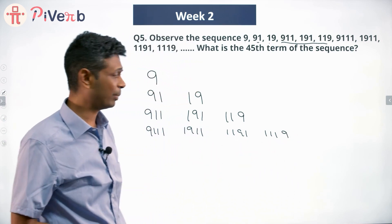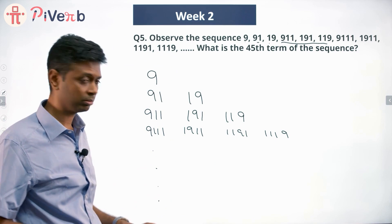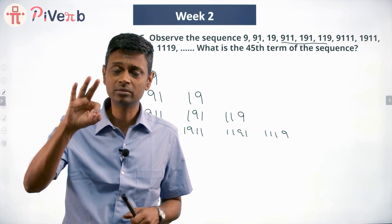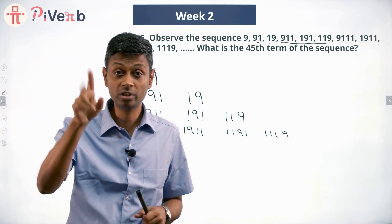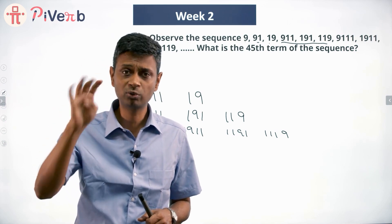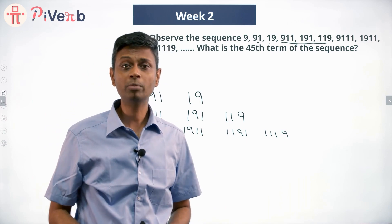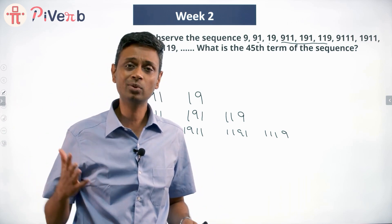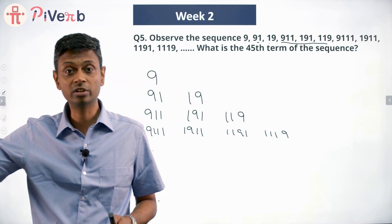Now we have got the pattern. Then we will have 5-digit, 6-digit, 7-digit, 8-digit numbers and so on. How many 3-digit numbers are there? Three — because 9 could be in the first, second, or third position. How many 4-digit numbers? Four. How many 14-digit numbers? Fourteen — 9 goes from the first digit all the way to the 14th digit.